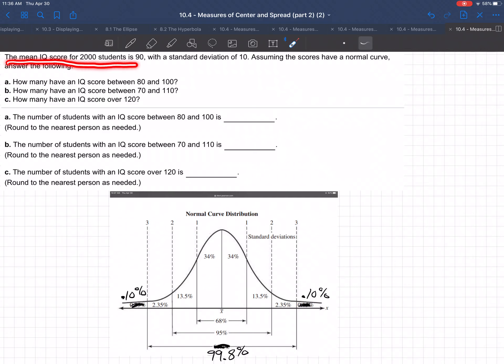The mean IQ scores for 2,000 students is 90, with standard deviation 10. Assume the scores have a normal curve. Assuming the scores have a normal curve, answer the following.